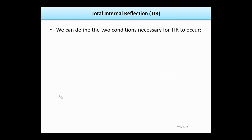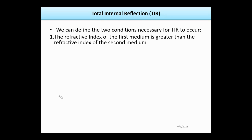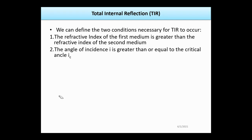You can define two conditions necessary for TIR: first, the refractive index of the first medium is greater than the refractive index of the second medium; second, the angle of incidence I is greater than or equal to the critical angle. If equal, light emerges at the boundary; if the incident angle is greater, the light returns to the same medium — and this is how optical fiber works.